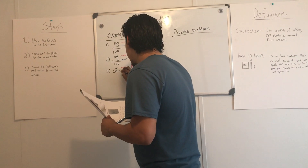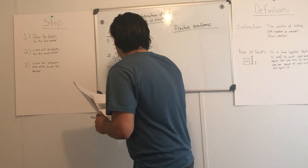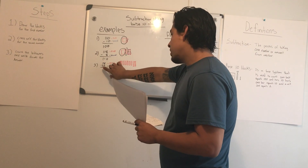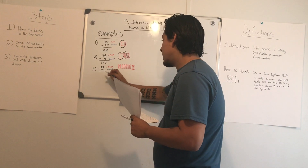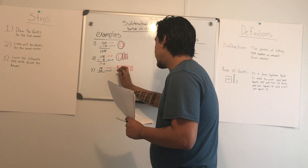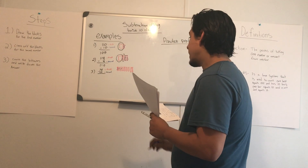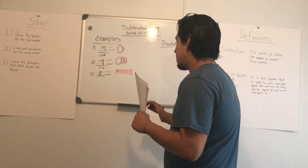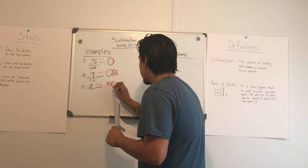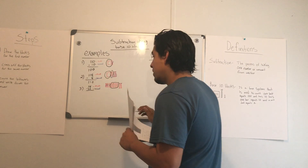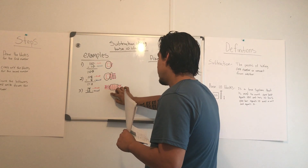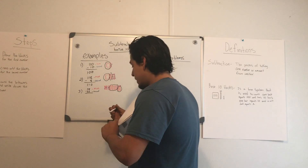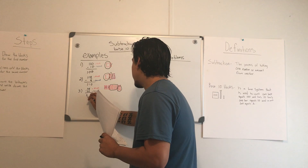Now for the second number, we are going to be crossing out the blocks for the second number. It's 32, so we want to cross out three bars since there are three bars in 30, and we want to cross out two units. After that we count the leftovers. There are four bars left over and six units left over, so the final answer is going to be 46.